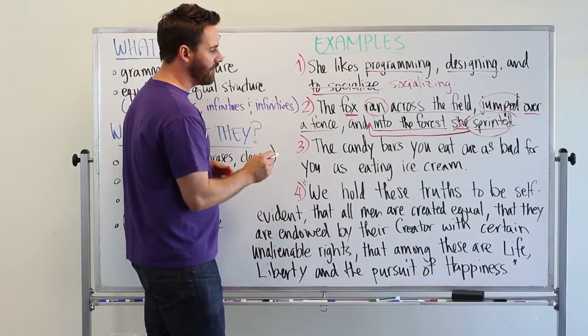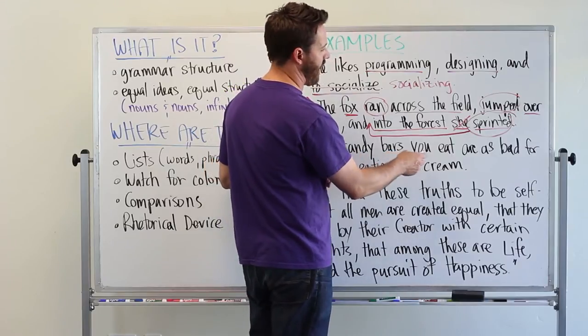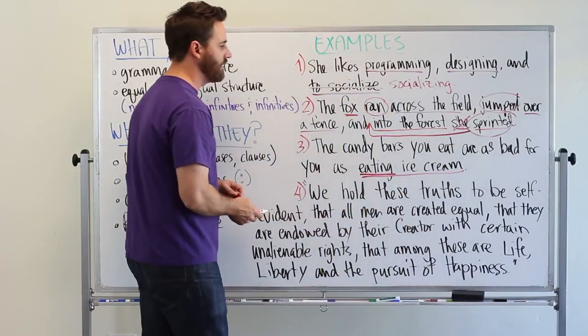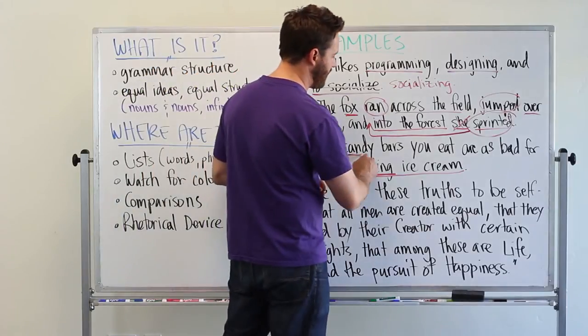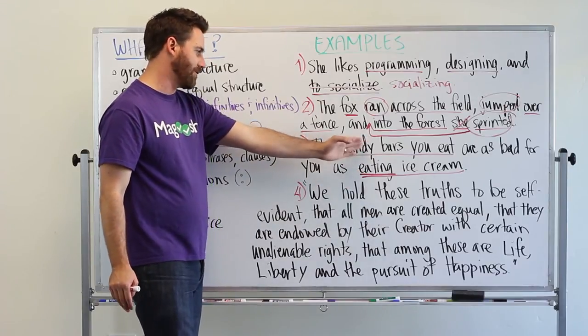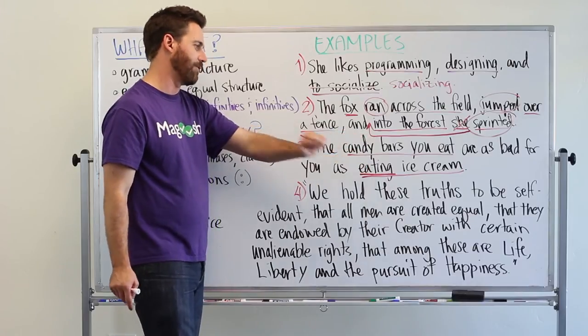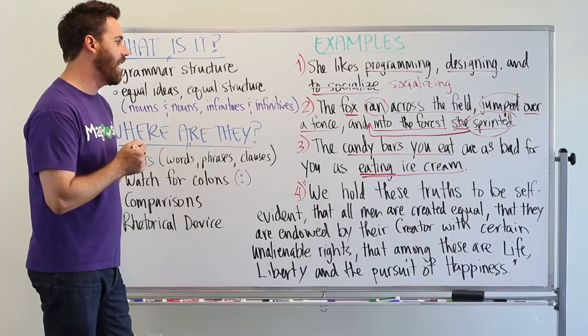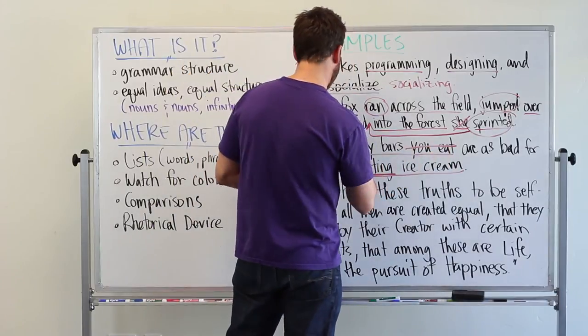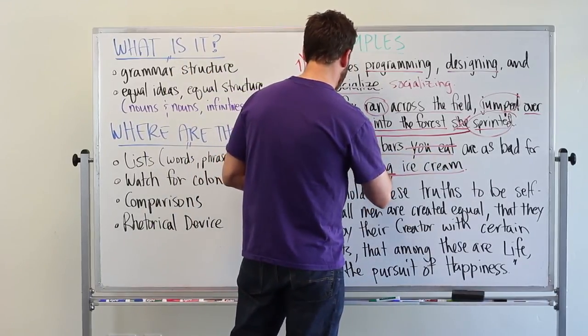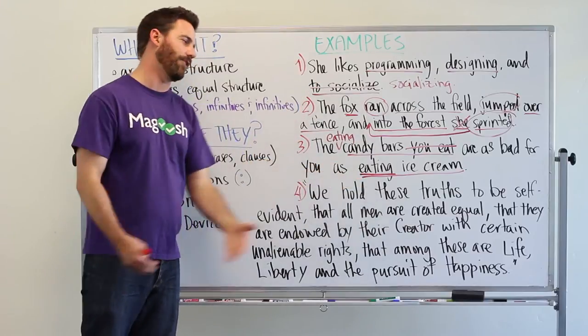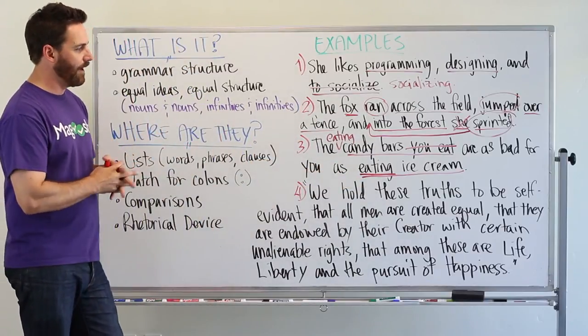So we have the candy bars you eat. So we have candy bars as a noun. Aren't as bad for you as eating ice cream. And so here we have a gerund phrase. And then that does not match with the candy bars you eat. So we can adjust this two different ways. We can make this match this format. Or we can take this format and make this format match. I think the easiest way is to just match the gerund format here. And say, eating candy bars. So we get rid of this and just say eating candy bars are as bad for you as eating ice cream. And so then our two structures are in parallel. So they're equal. They match each other. And it's just easier to read.